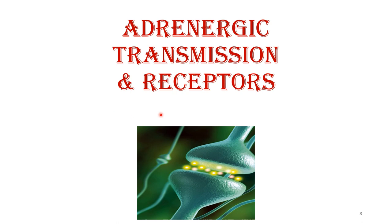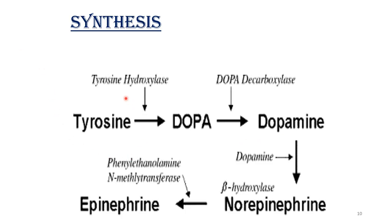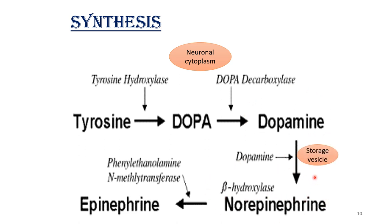Now, adrenergic transmission and receptors. Neurotransmitter release involves five steps: synthesis, storage, release, uptake, and metabolism. Tyrosine from food is converted into DOPA in the presence of tyrosine hydroxylase, and DOPA is converted to dopamine by DOPA decarboxylase in the neuronal cytoplasm. Dopamine is then converted into norepinephrine by dopamine beta-hydroxylase and stored in vesicles. Norepinephrine is converted into epinephrine at the adrenal medulla.